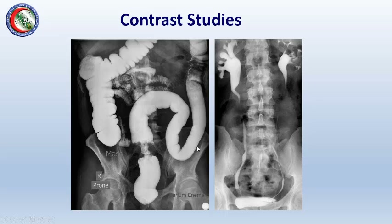Contrast materials are special materials which block X-ray and provide more detail. A contrast enema uses barium sulfate to fill the colon, which is normally not visible on a plain abdominal X-ray, allowing us to see its entire outline. In this example, a structure at the recto-sigmoid junction turned out to be colon cancer. Intravenous urography gives contrast through the veins, which is then excreted by the kidneys, showing the collecting system, ureters, and bladder.